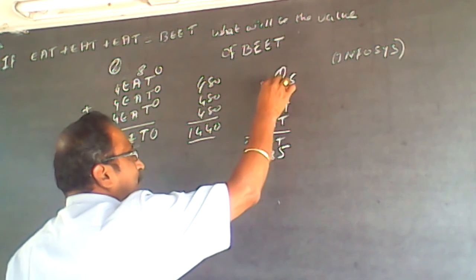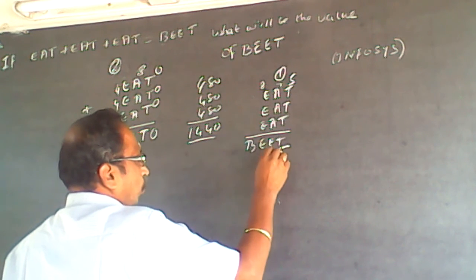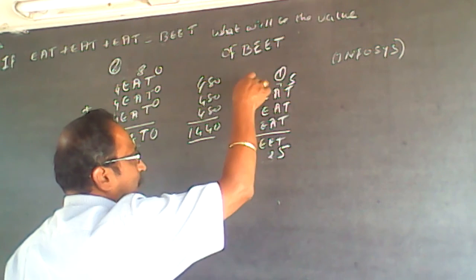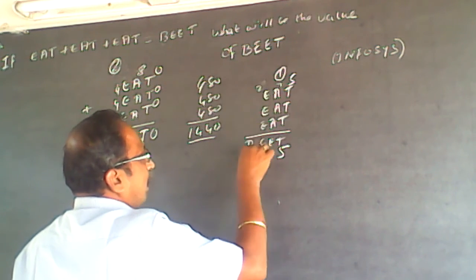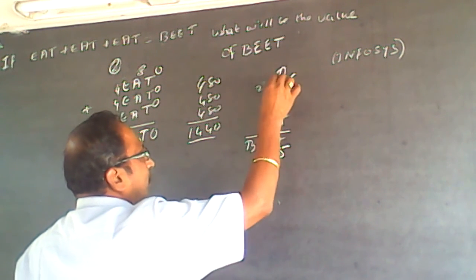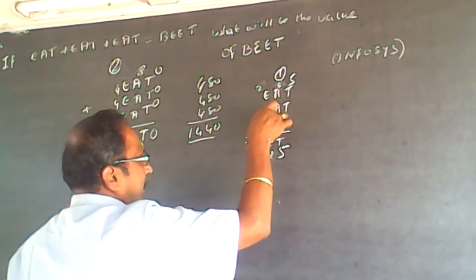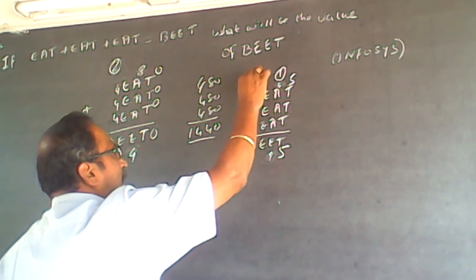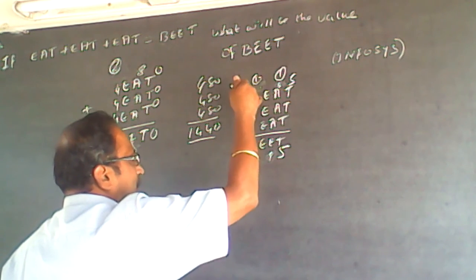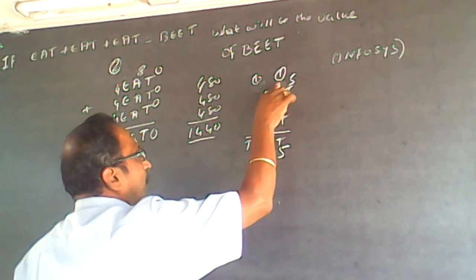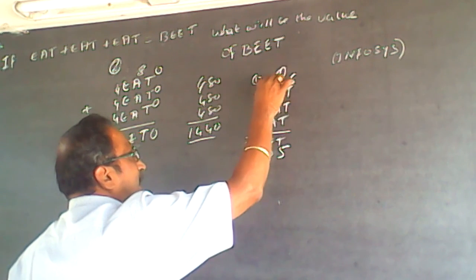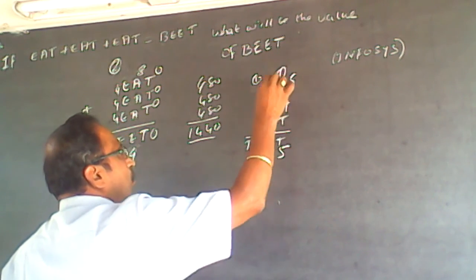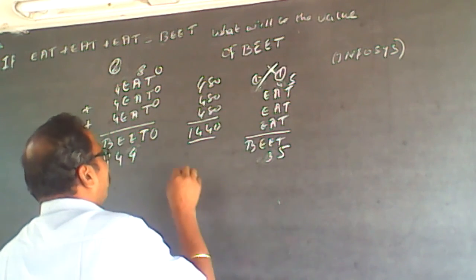Trying A=7: E would become 2, but the carry-over column also gives 2, causing a conflict — 7 is ruled out. Trying A=6: 3×6=18, giving 9 with 1 carry, but I need 2 carry-over for E=9, which I can't get — 6 is ruled out. Trying A=4: 3×4=12 giving 3, but E can't repeat — not possible.